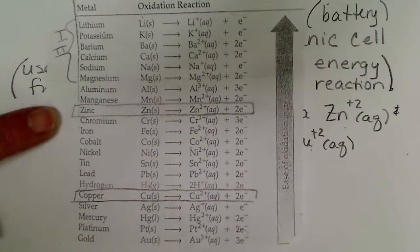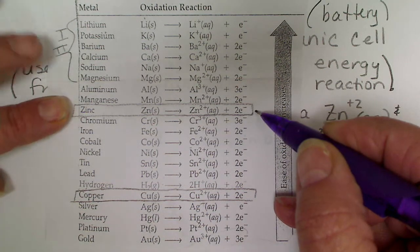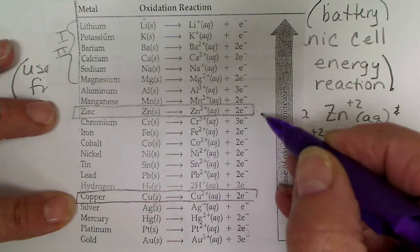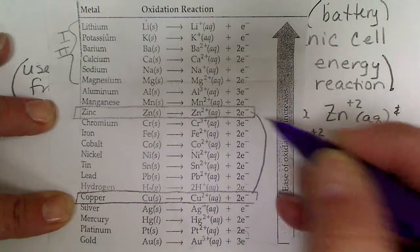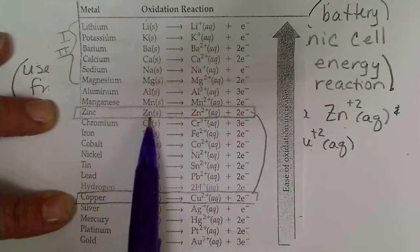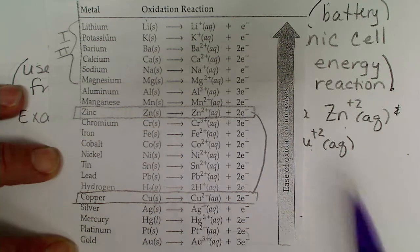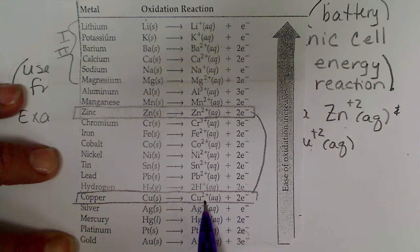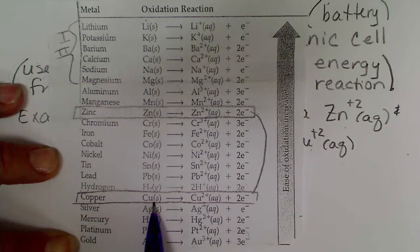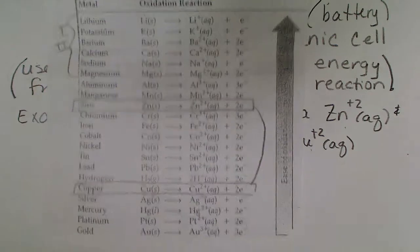When we consider the activity series, zinc is higher on it than copper, meaning that zinc is more easily oxidized. When this reaction runs — when we connect the two cells with a wire so that electrons can transfer — the zinc electrode is going to be oxidized, so it will dissolve and go into solution, and the copper electrode will actually get heavier as the copper 2+ blue solution gets reduced to solid copper.